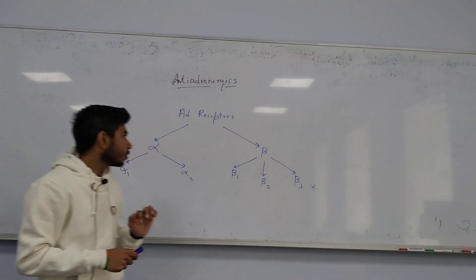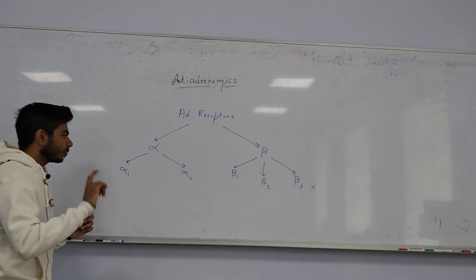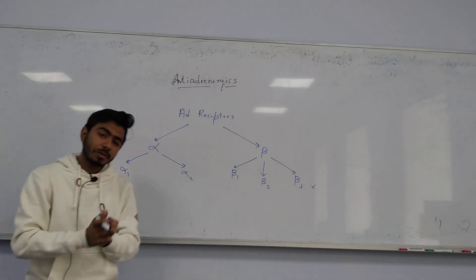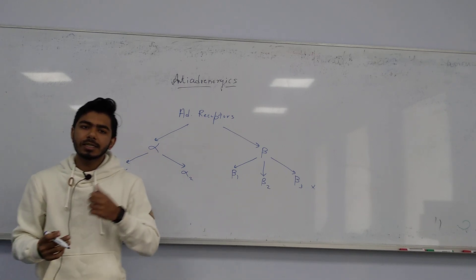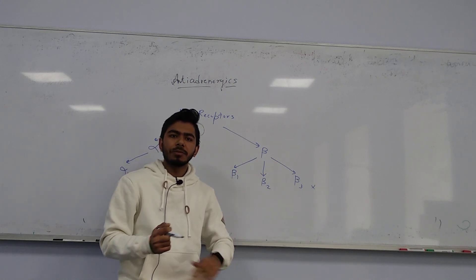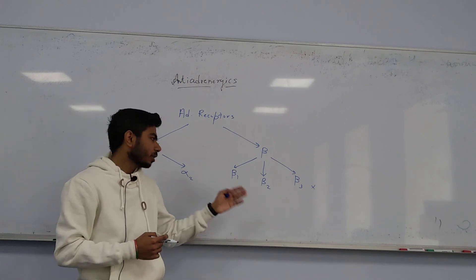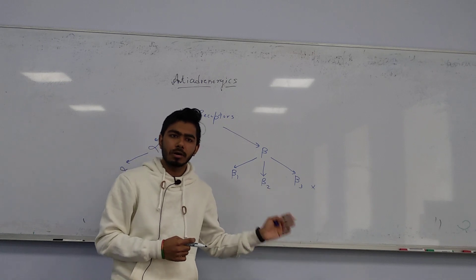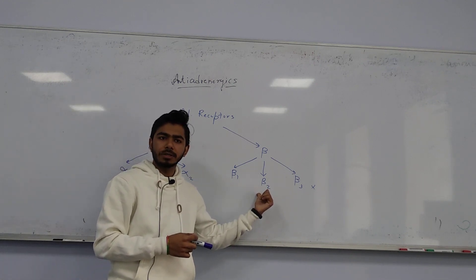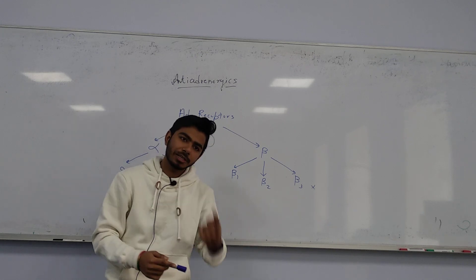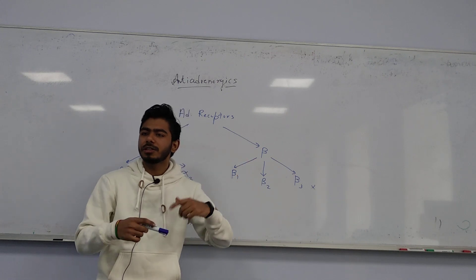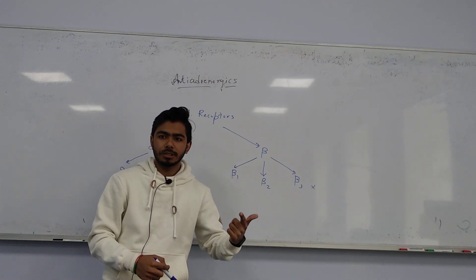Today we are talking about adrenergic blockers. Some drugs block both alpha 1 and alpha 2 — we call them non-selective. Drugs blocking selectively alpha 1 or alpha 2 are called selective alpha blockers. Similarly, beta blockers can be non-selective (blocking beta 1 and beta 2) or selective. Some drugs have mixed action, blocking both alpha and beta receptors. In the last class we discussed epinephrine and norepinephrine, which stimulate both alpha and beta receptors.